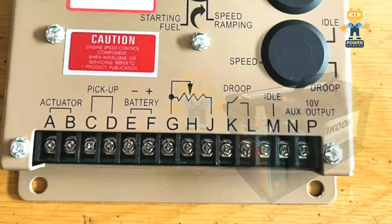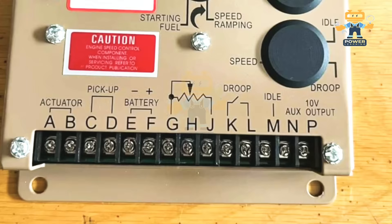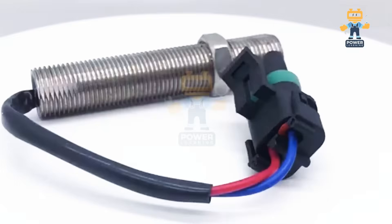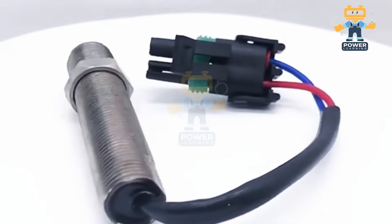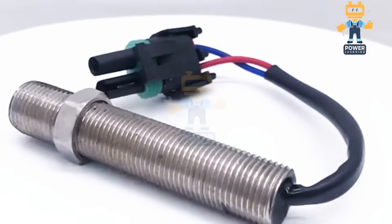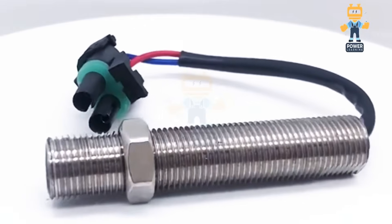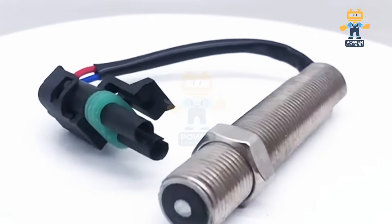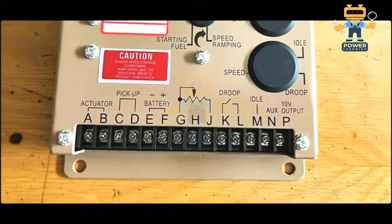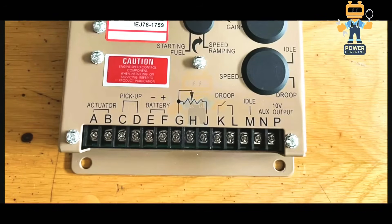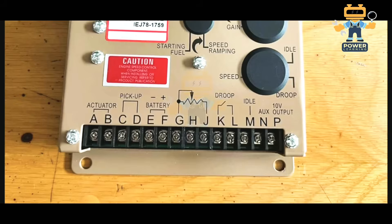After that we have pickup. What is pickup? The full form of pickup is magnetic pickup or MPU. Magnetic pickup is the sensor which is installed on the engine flywheel. This is like a small AC generator.